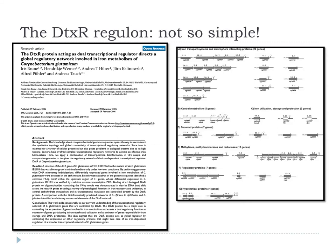It seems quite simple — but in fact it's not that simple. As we moved into the 21st century with genomes and whole-genome approaches, it became clear that there's a whole range of things regulated by DtxR. Although we focused on it initially because it regulated the diphtheria toxin, here's a related organism, Corynebacterium glutamicum — a close relative of Corynebacterium diphtheriae. The homologous protein DtxR here is actually regulating a global regulatory network involved in iron metabolism: iron transport systems, secreted proteins, iron utilization and storage, other regulatory proteins, and hypothetical proteins — all these different gene clusters regulated by this single regulator.